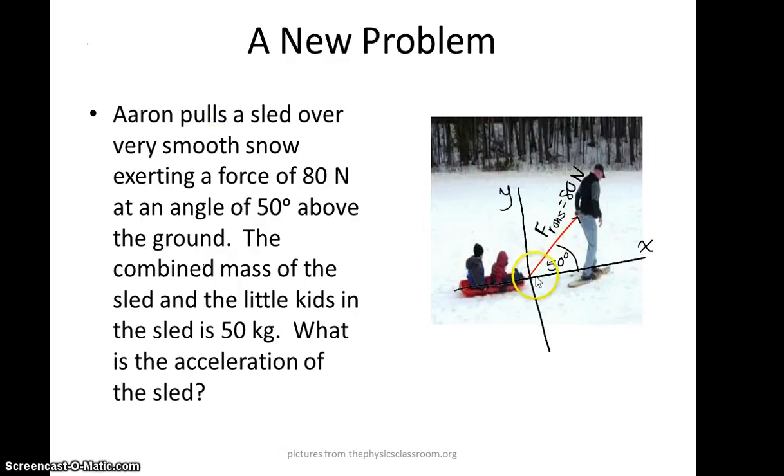We have a picture here of this guy Aaron, and he's pulling a sled over very smooth snow. So the fact that this is very smooth snow, let's say that friction is negligible here, so we won't be considering friction. And he's exerting a force of 80 newtons at an angle of 50 degrees above the ground. So what I've done here is I've drawn in a y-axis and an x-axis, and now I've drawn this force at an angle here. In the picture, underneath this line I've drawn, you can actually see the rope that he's pulling. And so I think this is a great example to start out with of a force at an angle.